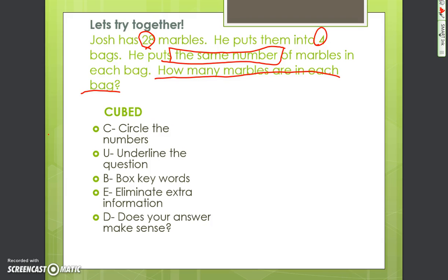Let's pull out our numbers. We have 28, and we want to split it into 4 bags. We want to make sure it's equal. So we need to figure out our answer by using division: 28 divided by 4.